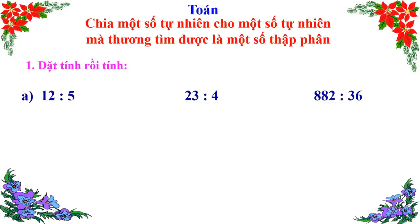Bài tập đầu tiên: 12 ÷ 5. Đặt tính: 12 ÷ 5 được 2, viết 2 ở thương; 2 × 5 = 10; 12 − 10 = 2. Viết dấu phẩy vào bên phải số 2 ở thương, thêm 0 vào bên phải số 2 để được 20. 20 ÷ 5 được 4, viết 4 ở thương; 4 × 5 = 20; 20 − 20 = 0. Vậy 12 ÷ 5 = 2,4.